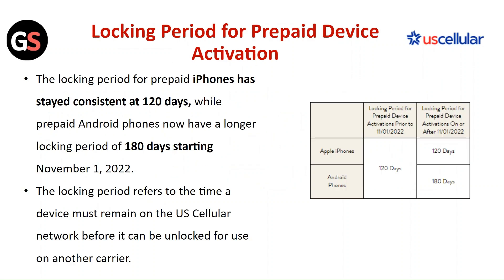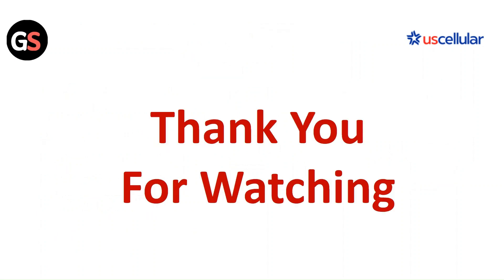The locking period for prepaid device activation: the locking period for prepaid iPhones has stayed consistent at 120 days, while prepaid Android phones now have a longer locking period of 180 days starting November 1, 2022. The locking period refers to the time a device must remain on the US Cellular network before it can be unlocked for use on another carrier. Thank you for watching — please like this video and subscribe to our channel.